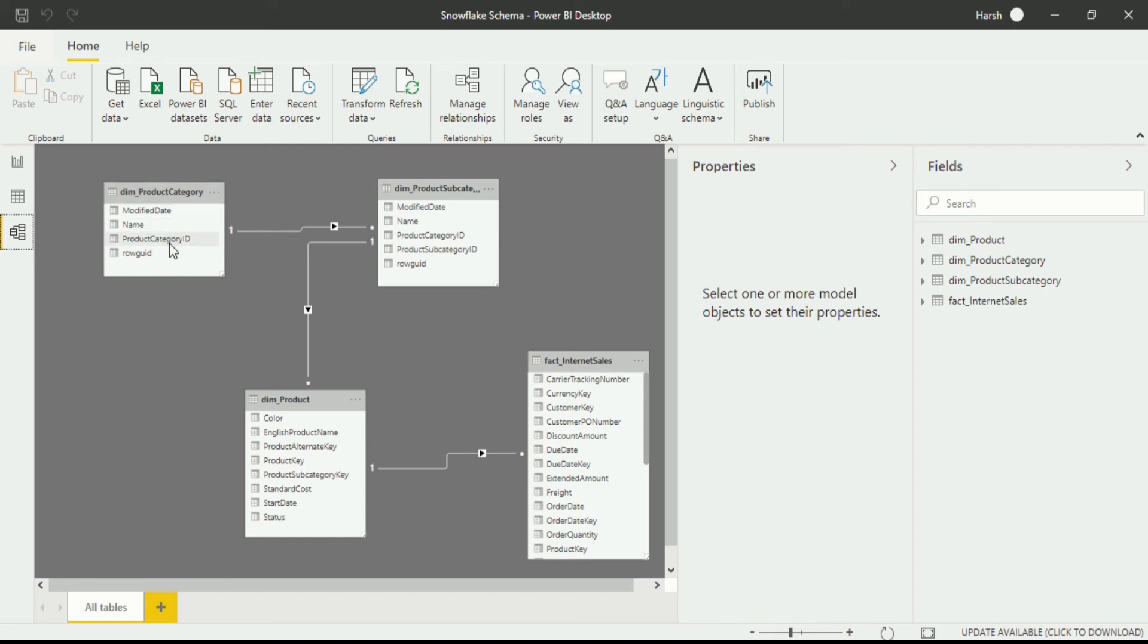Like I have a product country category with product category ID. And within this subcategory we have a category ID, but we do not have data for name, modified date, and row gate. We have only the name, but the modified date and row gate are absent here.